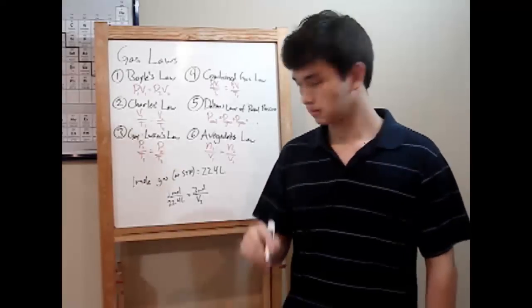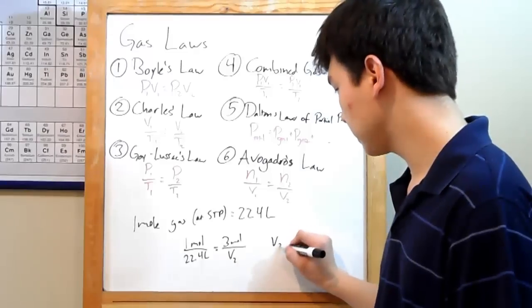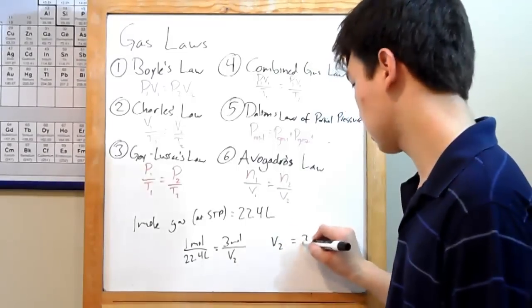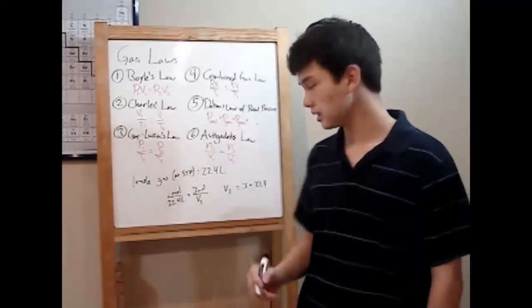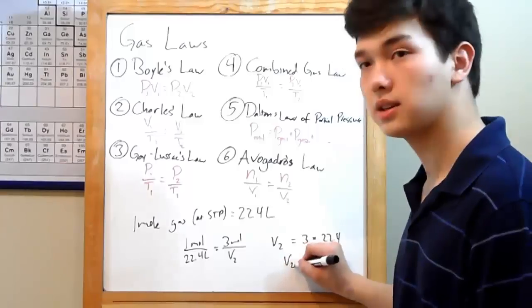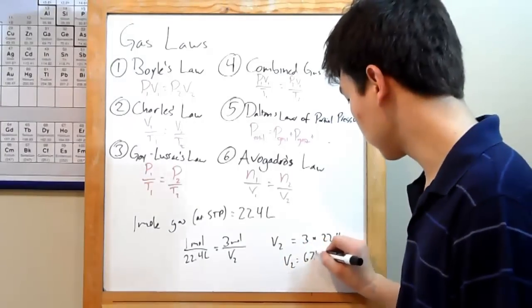Well, plug in. You eventually get that V2 is just 3 times 22.4. Multiply, and you get that V2 is 67.2 liters.